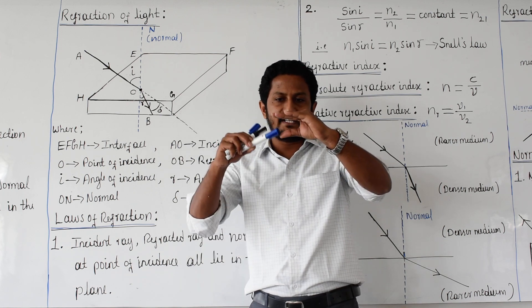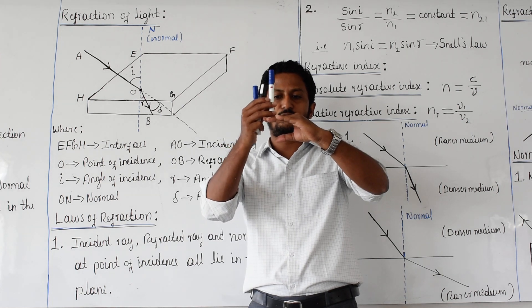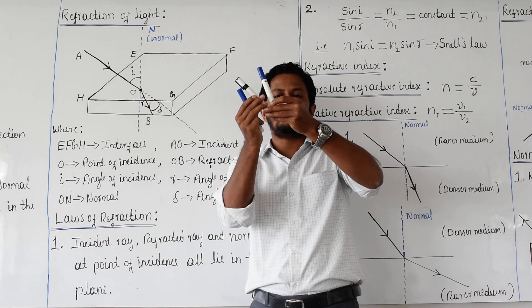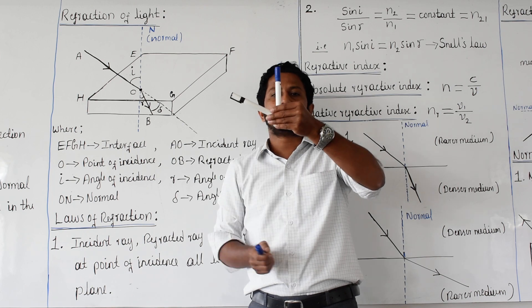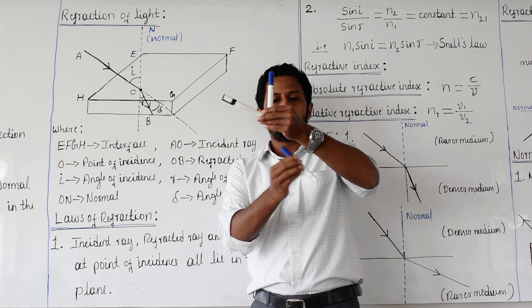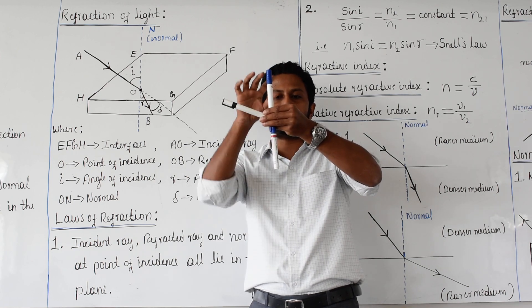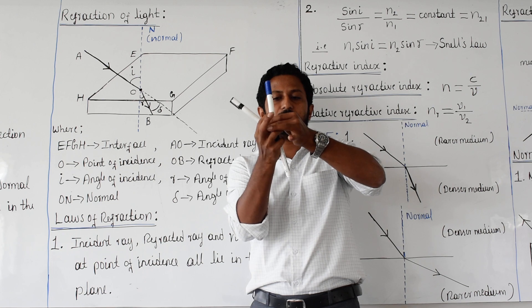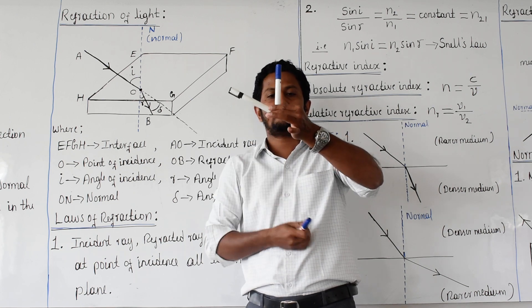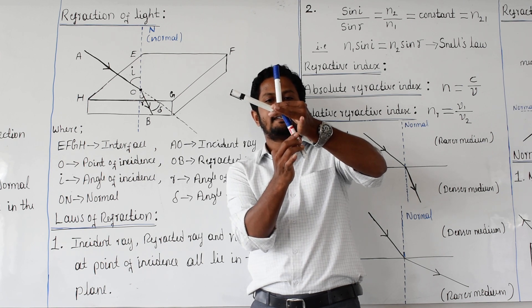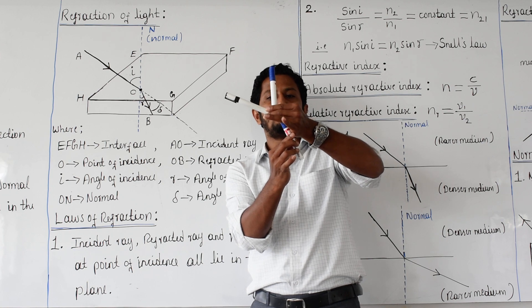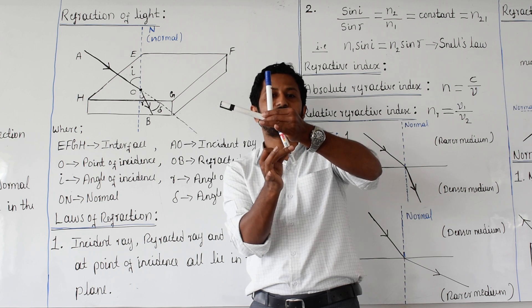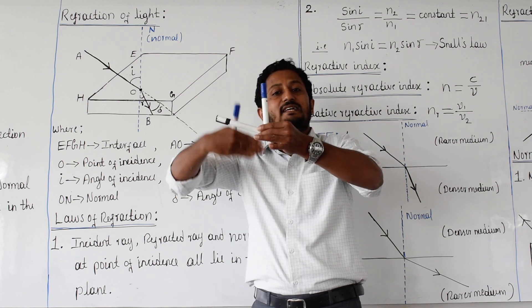Imagine this as the glass slab with some thickness. This is the normal, this is the incident light ray, and this is the refracted light ray. Instead of going straight, it bent towards the normal. The incident light ray, normal, and refracted light ray — all three are lying in the same plane. That is the first law of refraction.